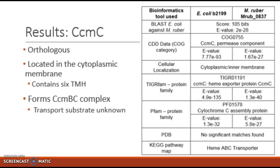CCM-C is very similar in results to CCM-B due to them being alternate subunits of the same transporter. Like CCM-B, CCM-C is located within the cytoplasmic membrane and contains six transmembrane helices. The common matches and low E-values listed in the table confirm that B-2199 and M-Rub-837 are orthologs and that they share the same function.